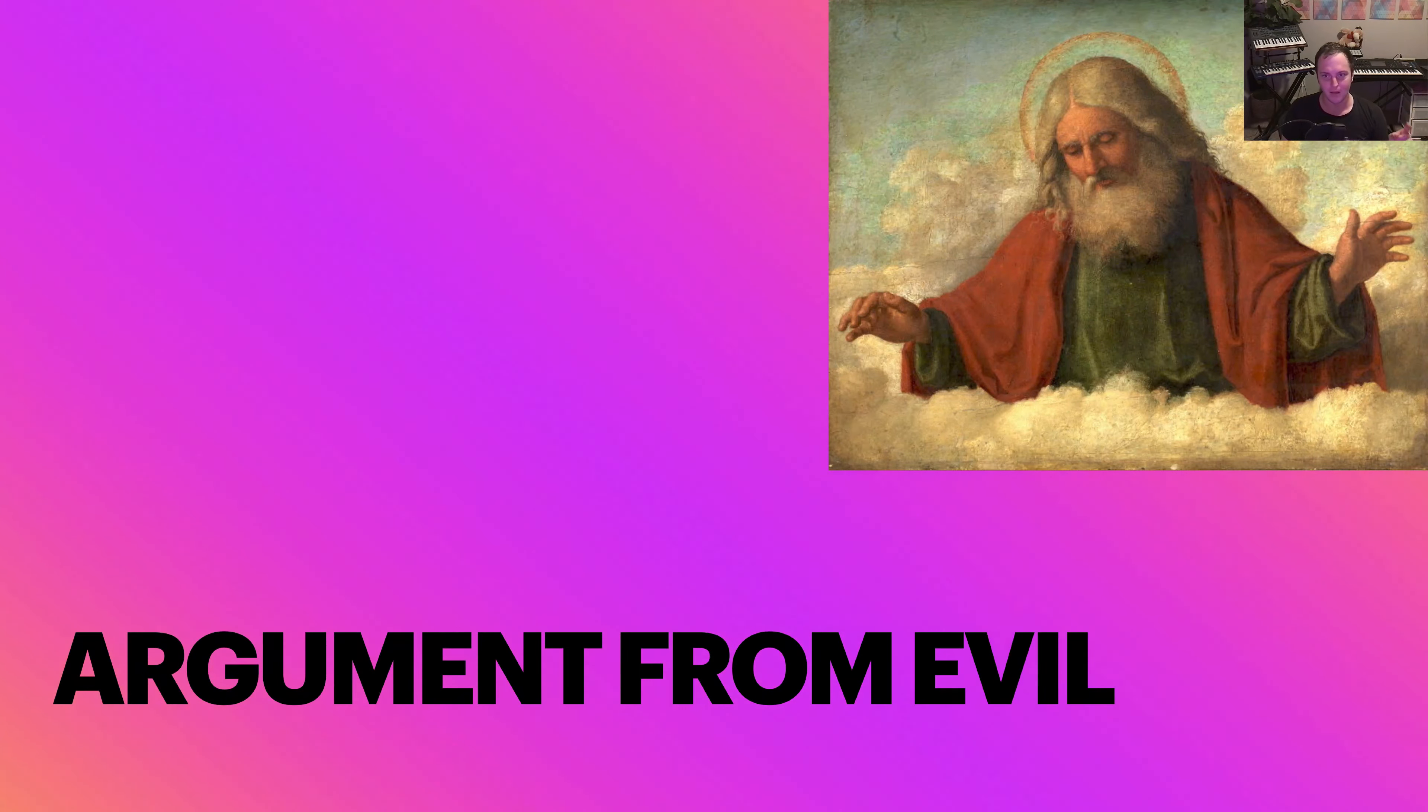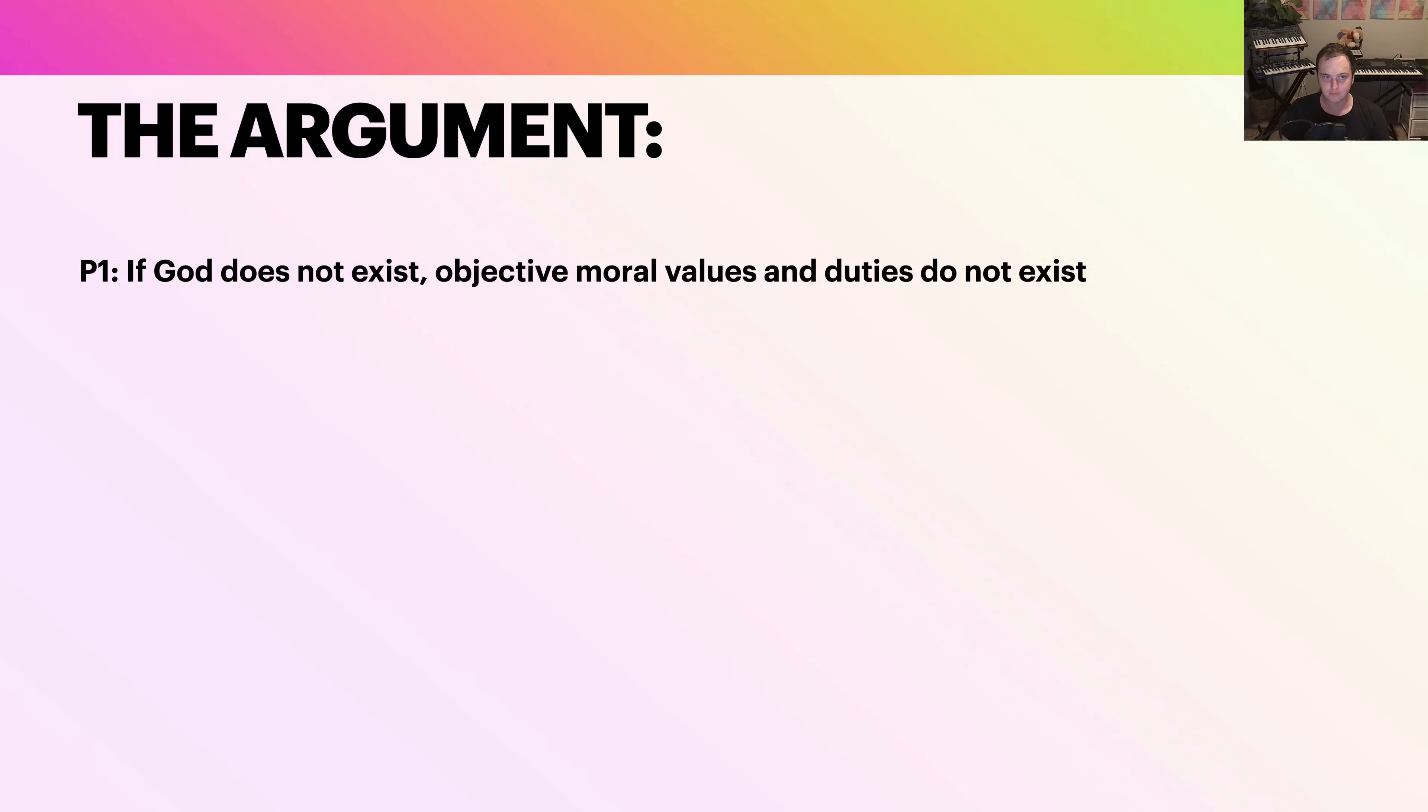I'll give it in three forms. The most basic form goes like this: Premise one, if God does not exist, objective moral values and duties do not exist. Premise two, evil exists. Premise three, therefore objective moral values and duties exist. This is very similar to William Lane Craig's version of the moral argument for the existence of God, except this way it's actually resting on evil or using evil to demonstrate the existence of objective moral values and duties.